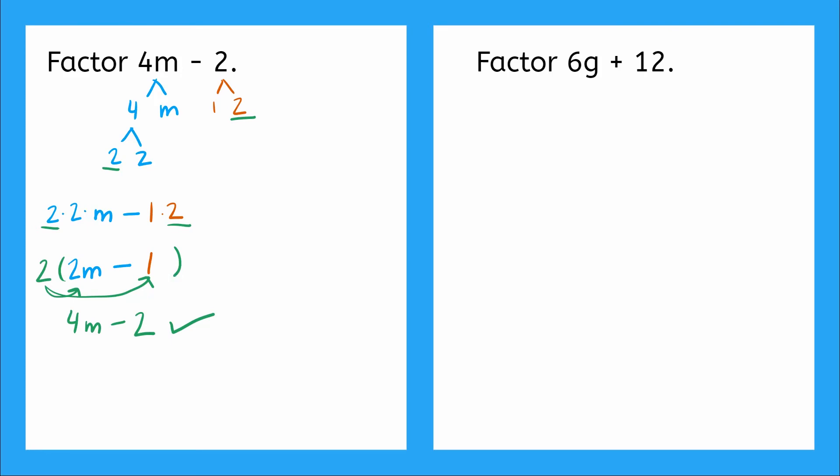Now let's go over to our second one here. We have 6g plus 12. So I'm going to start by factoring 6 and g. I get a 6 times g. And how about for my 12? So a few ways I could factor 12. 1 and 12, 2 and 6, 3 and 4. Do we see any matching factors here? Yes. We have a 6 here and a 6 here.